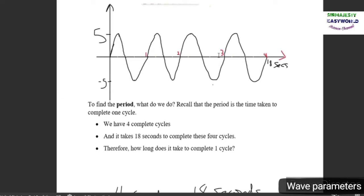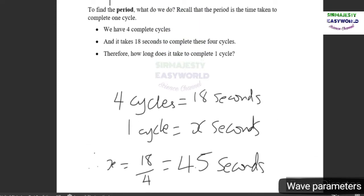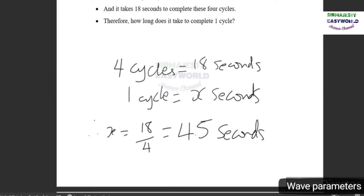We have one, two, three and four. We have four complete cycles and it takes the wave 18 seconds to complete these four cycles. Therefore, how long does it take to complete one cycle? That's basic arithmetic. If you have four cycles in 18 seconds, expect one cycle to be done in about 4.5 seconds.